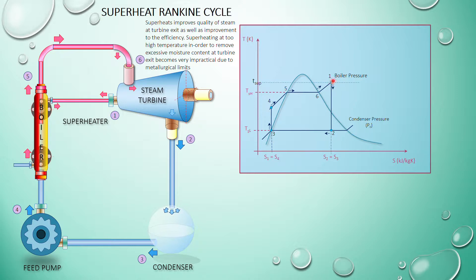To find h1, you need the superheated temperature and the boiler pressure. At state point 1, find the enthalpy h1 and entropy s1. The steam undergoes isentropic expansion to point 2, so s1 equals s2. From s2, which equals s1, you use the formula with sf and sfg to find the dryness fraction x.